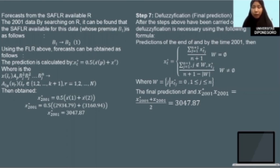This is the value of the result. Step number seven is final prediction or defuzzification from the two kinds of FLRs. Now we find the final result.